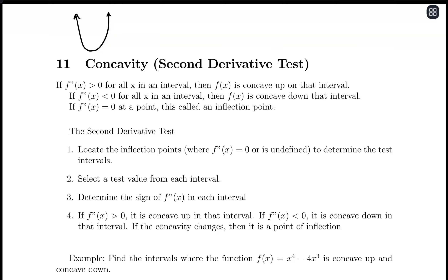Concave up is where the function switches from decreasing to increasing. Concave down is the shape of a parabola opening downward. If it were raining, this would be like an umbrella — it wouldn't gather any water; it actually repels water. Notice that concave down also has increasing and decreasing portions, but it goes from increasing to decreasing. So the order of increasing and decreasing differs between the two.